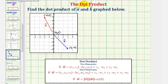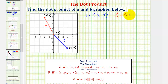Vector A in component form has an x-component of positive three and a y-component of negative four. Vector B has an x-component of negative two and a y-component of positive five. To find the dot product of vector A and B, we find the sum of the products of the corresponding components.